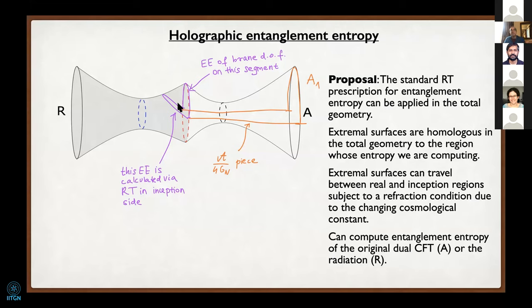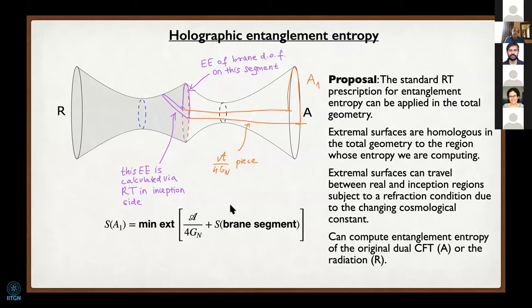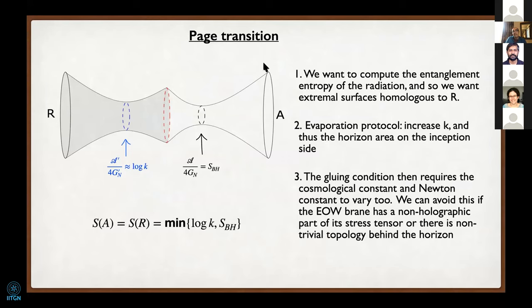When the inception horizon is smaller—less radiation—it dominates the entropy calculation. When the original black hole horizon is smaller—lots of radiation—it dominates. That's the fundamental source of this transition between the two phases. The exchange of dominance is related to the RT picture I was drawing earlier.